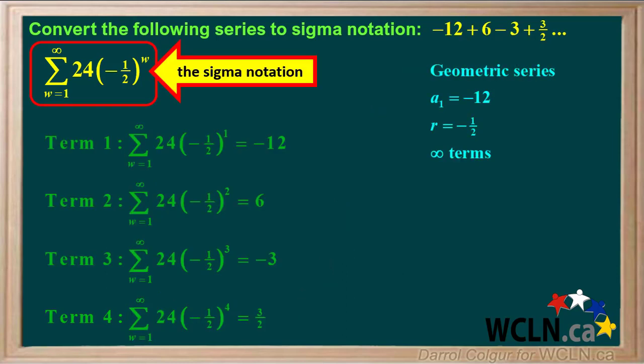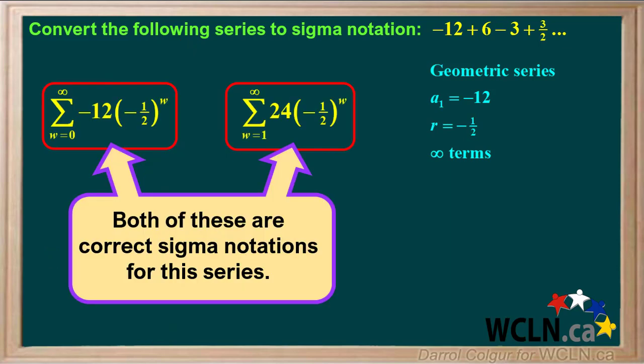We can see that this sigma notation also gives the correct values for all the terms in the series, so it is also correct. To summarize, we can state that both of these are correct sigma notations for the given series. Thank you very much.